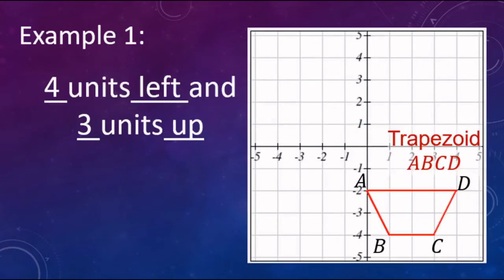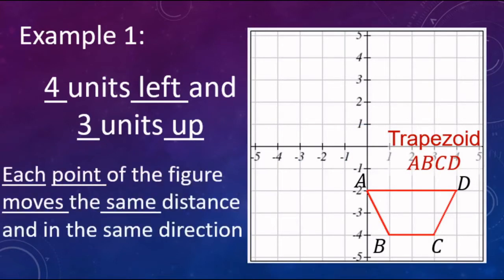Now if we're actually doing this with a pencil and paper, we are going to be going vertex by vertex. So we're going to take this trapezoid ABCD and translate it four to the left and three up. Each point of the figure moves the same distance and the same direction, so we just go point by point, vertex by vertex.